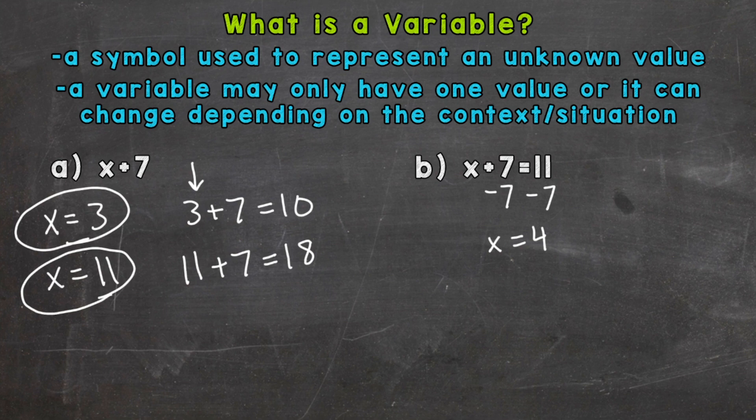You can also figure that problem out using mental math. x has to equal 4. 4 plus 7 gives us that 11. We can't say that x equals 6 here, because if we plug in 6, we would get 6 plus 7 equals 11, which is not true. In situation B, we have an equation in which that variable has a defined value. It has to equal 4 there.